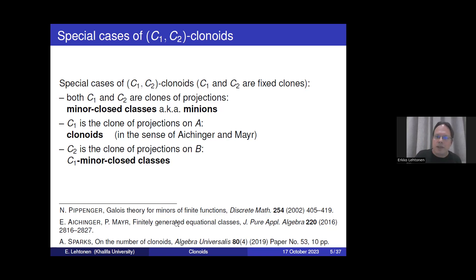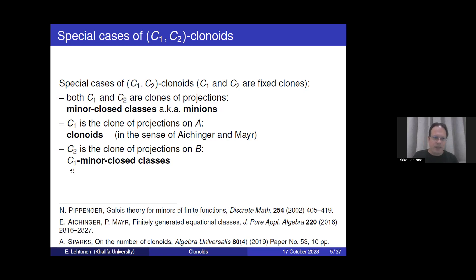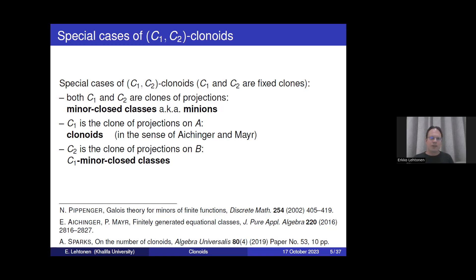When C2 is the clone of projections and C1 is an arbitrary clone, we get what I would call C1 minor-closed classes — we can compose functions from the inside with members of clone C1. But in general, C1 and C2 can be any clones, and we get a notion of C1-C2 clonoid for a fixed pair of clones C1 and C2.